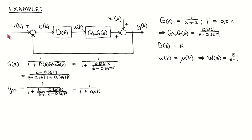To illustrate these concepts, let's work through a simple example. Suppose the continuous-time plant is described by the transfer function 1 over S plus 2 and the sampling period is 0.5 seconds. It can be shown that the equivalent discrete-time plant model is 0.3161 divided by Z minus 0.3679. Also suppose the controller is a proportional controller with gain K. The sensitivity function is then calculated as shown here.